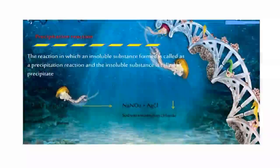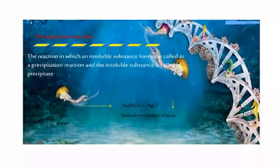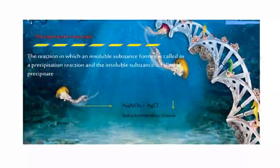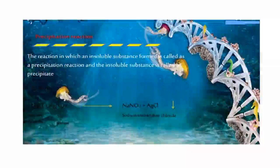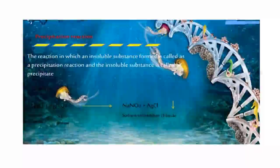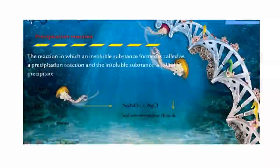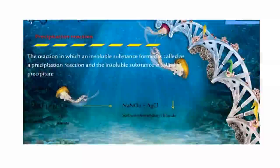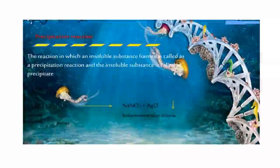Precipitation reaction: The reaction in which an insoluble substance forms is called a precipitation reaction, and the insoluble substance is called the precipitate. Example: Sodium Chloride plus Silver Nitrate gives Sodium Nitrate and Silver Chloride. NaCl + AgNO3 gives NaNO3 + AgCl.